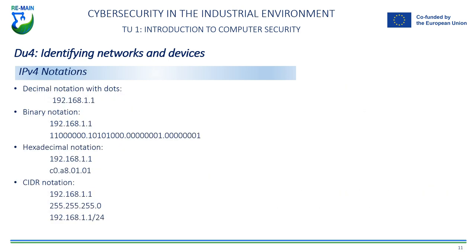The notation used for IP addresses is called dotted decimal notation, which is simply the representation of each octet of an IP address in decimal form separated by periods. In addition to dotted decimal notation, there is also binary notation, hexadecimal notation, and CIDR (Classless Inter-Domain Routing) notation. Binary notation is used to represent IP addresses in bit form. Hexadecimal notation is used to represent IP addresses in hexadecimal number form, where each octet is converted into two hexadecimal digits. CIDR notation is used to specify a network and its subnet mask, where a slash is placed after the IP address to indicate the subnet mask in bit number form.